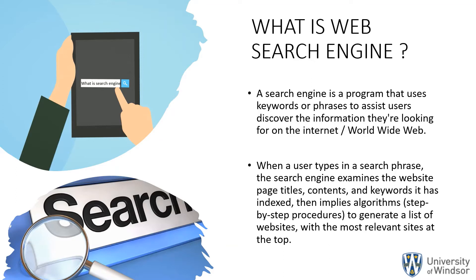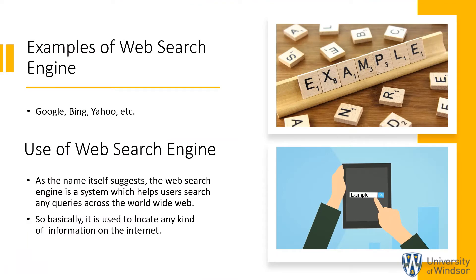When a user inputs a keyword, the search engine examines the page title, content of the website and keywords it has indexed. Then it applies various algorithms to generate a list of websites having the most relevant sites at the top. Examples of search engines we use daily are Google, Bing, and Yahoo. It is used to search any content or queries entered by the user across the World Wide Web, helping us to locate any kind of information available on the internet.